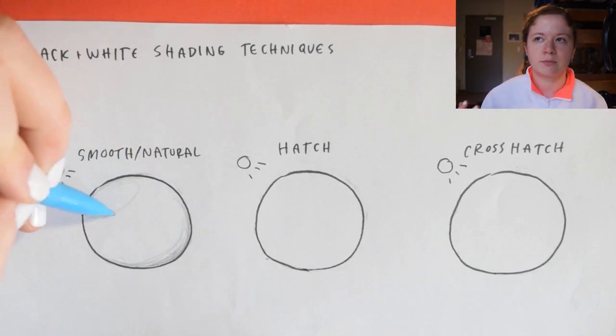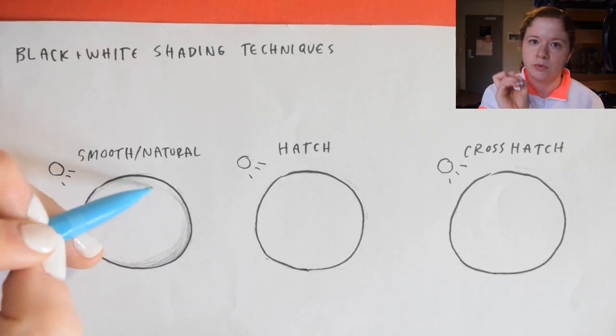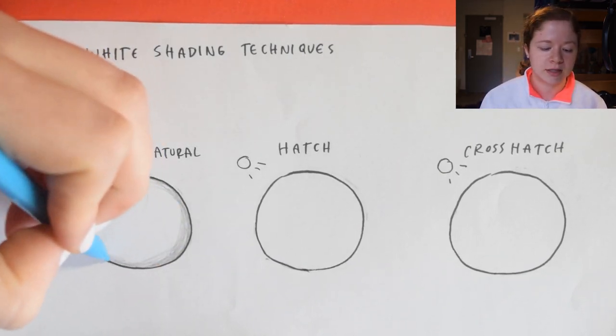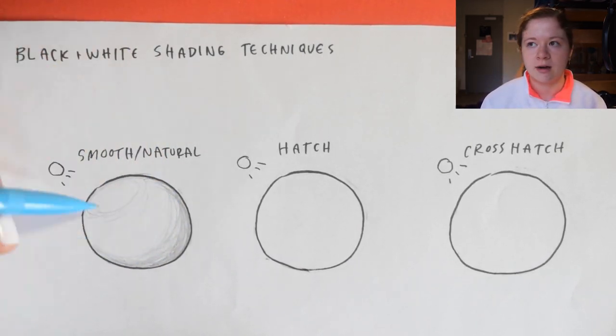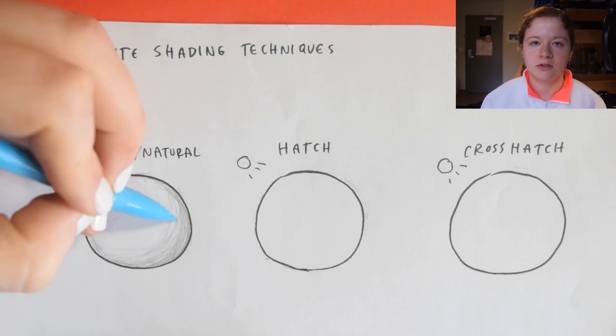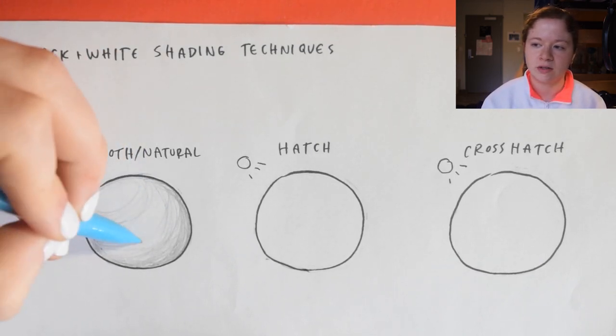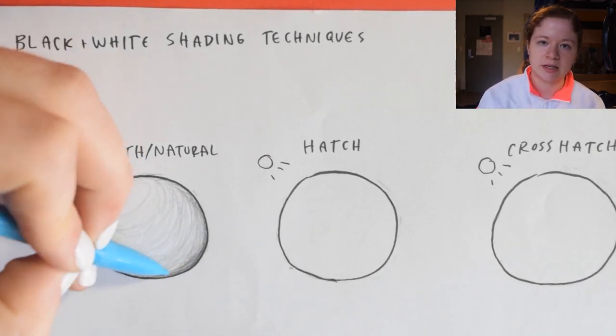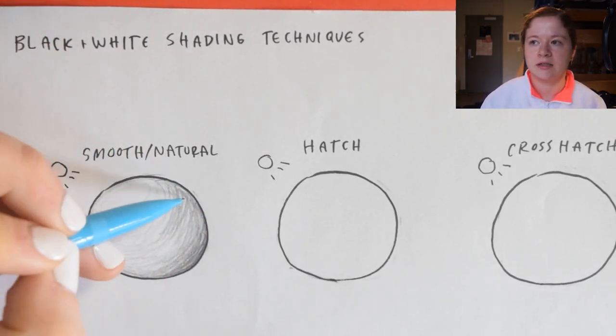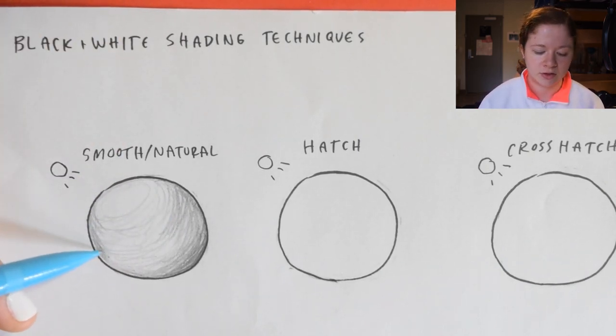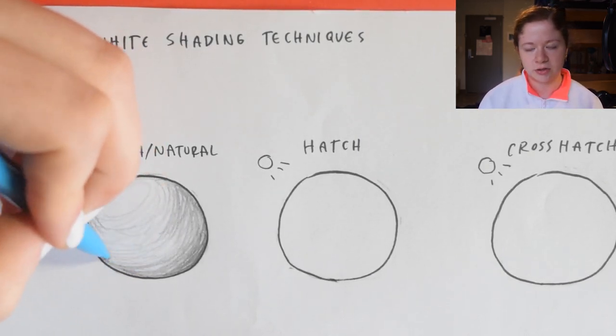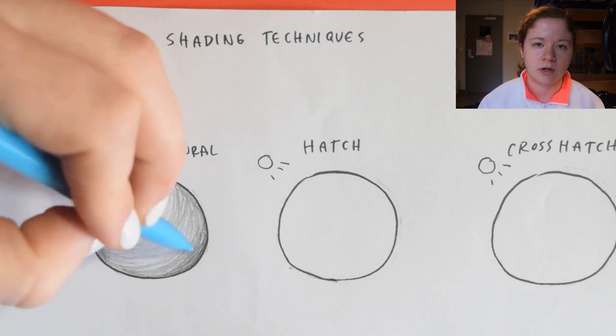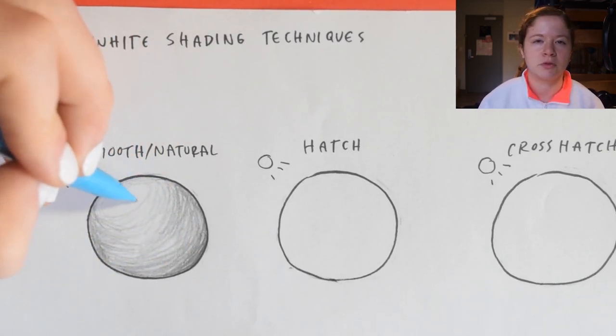Basically it is putting your brush strokes or your pencil strokes in the most natural form of the object. So if it's a circle, it's going to be kind of curvy with the object's natural flow. If it was hair, it's going to go along the hair. Clothes—it depends on the threading of it. The whole point of the smooth slash natural look is to make it all flow into one and look completely smooth and natural.